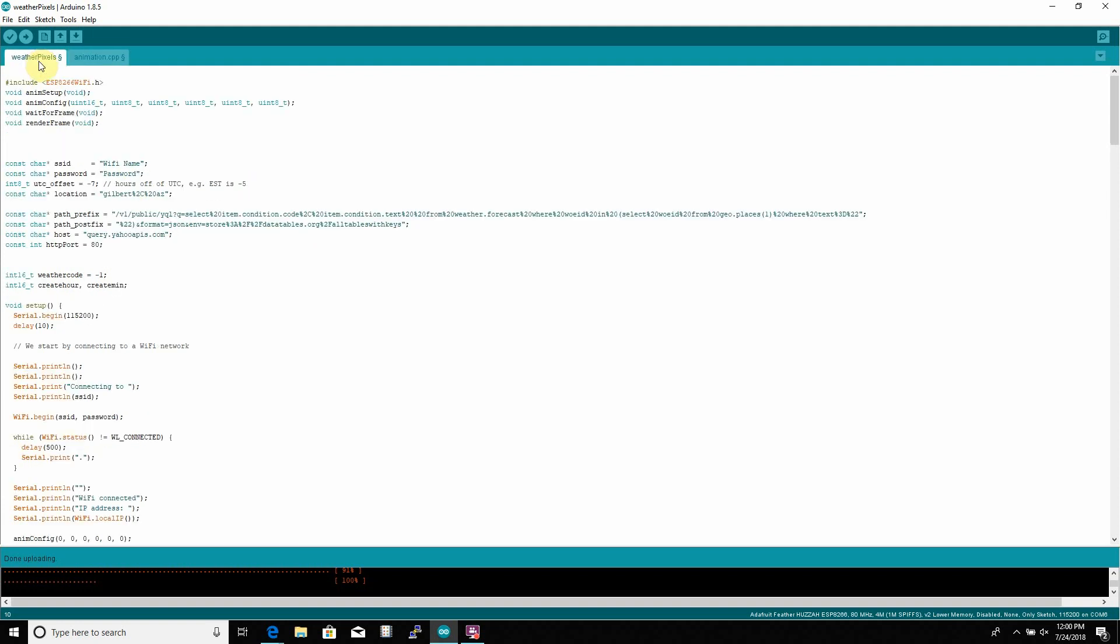Next, we will need the Wi-Fi name and password of whatever network you will be using for this project. So just type in your network name and your password and then the location.